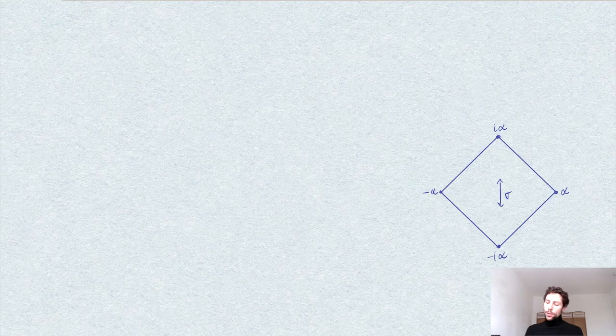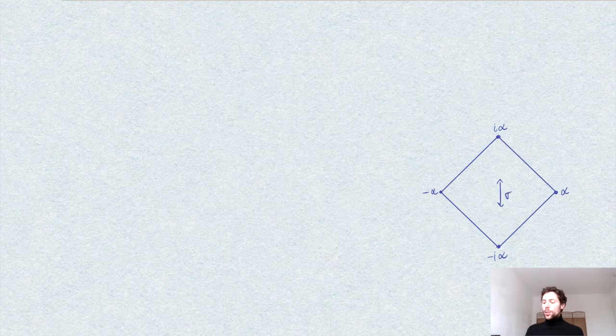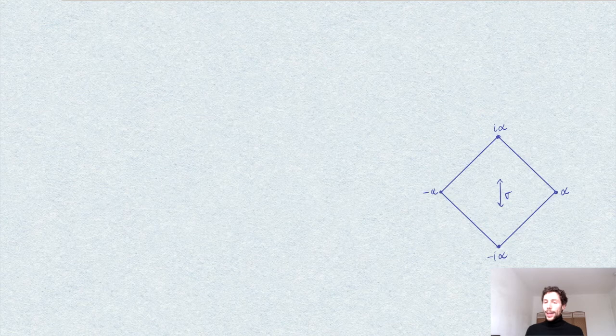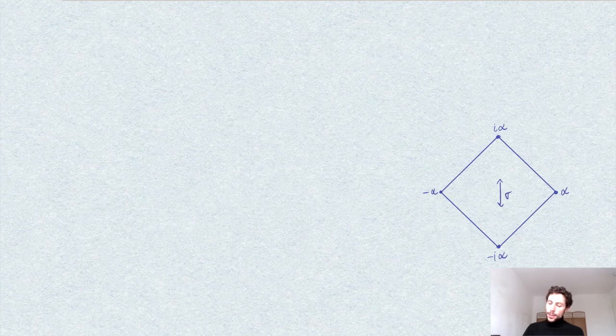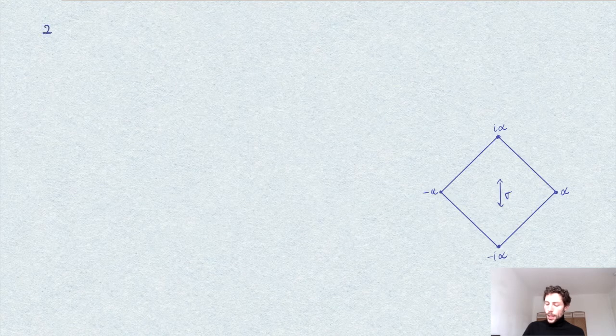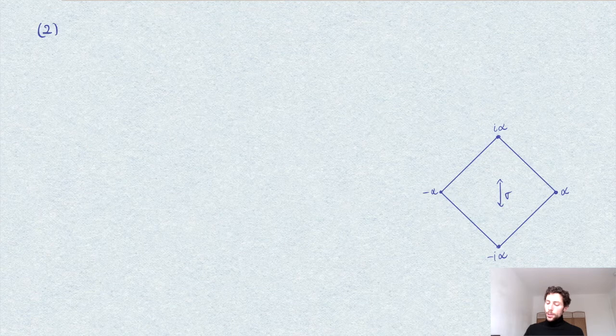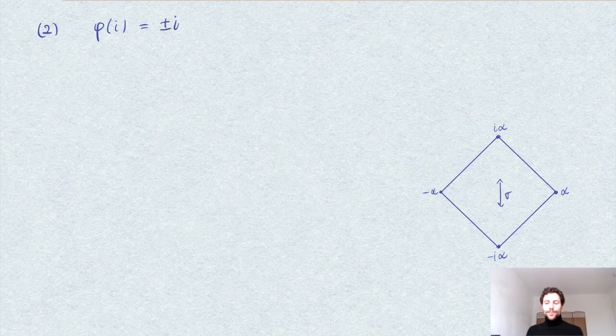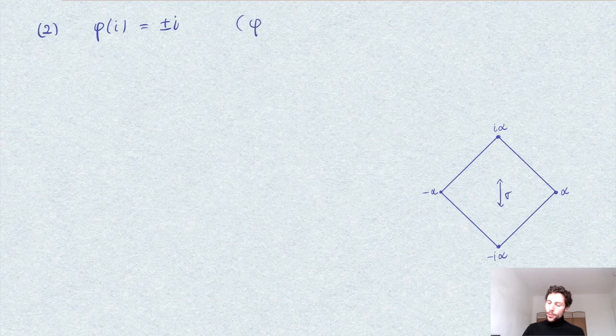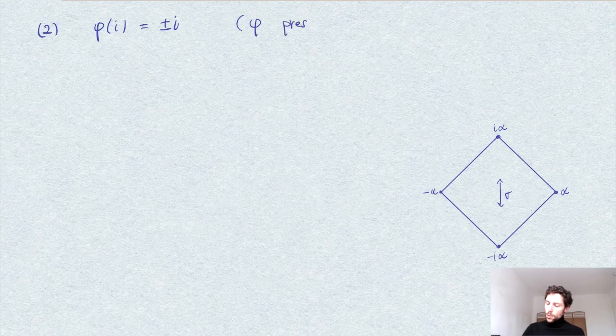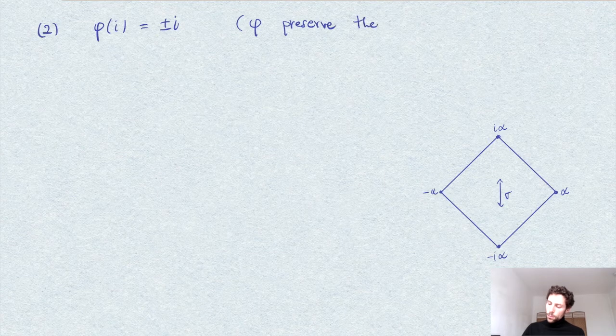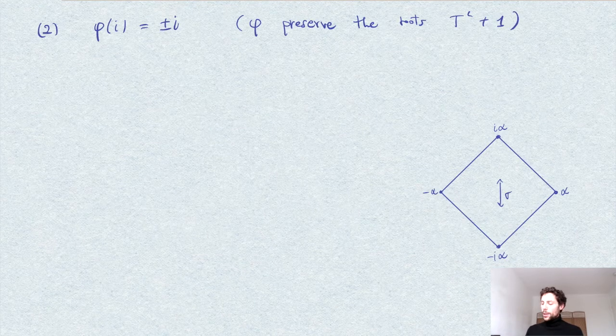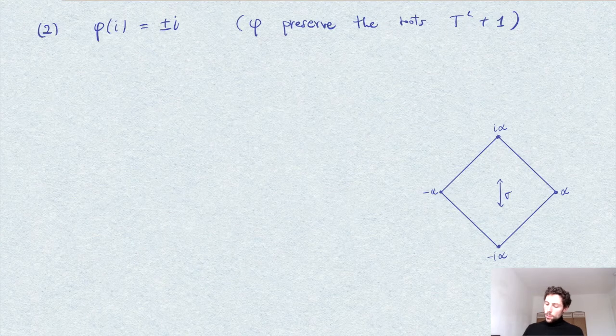So once we have this, we have our automorphism phi. And in order to determine what it is, we have to, as we said, specify its image on i, on the other element of the basis. So what we can say is that, as a second observation, phi of i will be either equal to i or minus i, because clearly phi has to preserve the roots of the polynomial t squared plus 1, which are i and minus i. So we have these two cases to analyze.